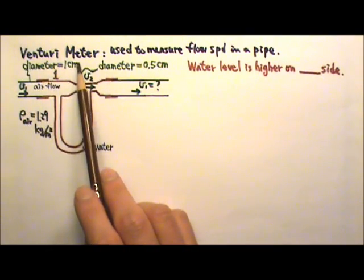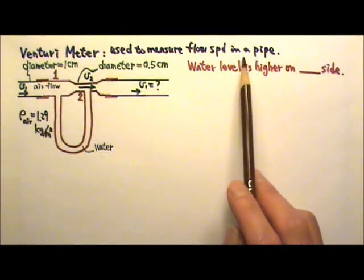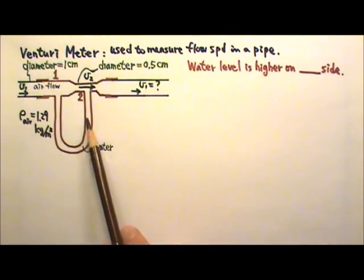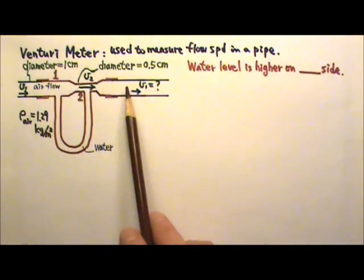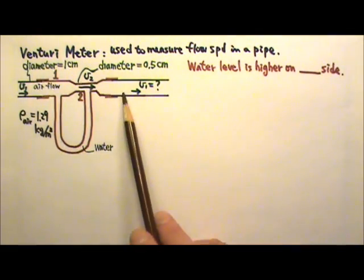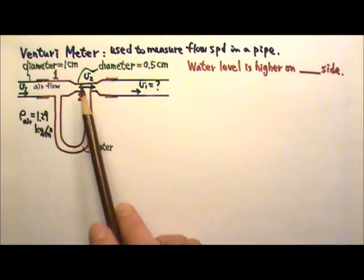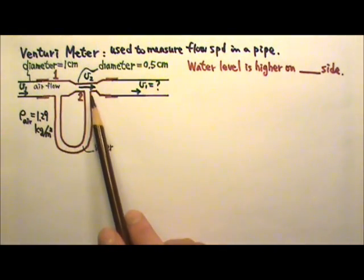A venturi meter is a meter that can be used to measure the flow speed of a fluid in a pipe. The meter is shown here in red. It is connected between two sections of a pipe. The diameter of the entrance and exit of the meter matches the pipe's diameter. In between the entrance and the exit, there's a constricted section with smaller diameter.